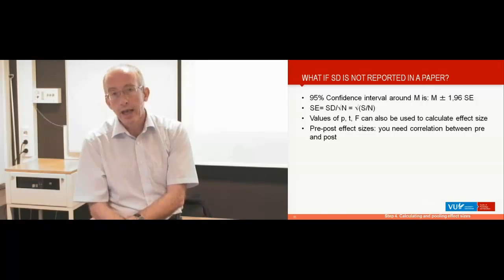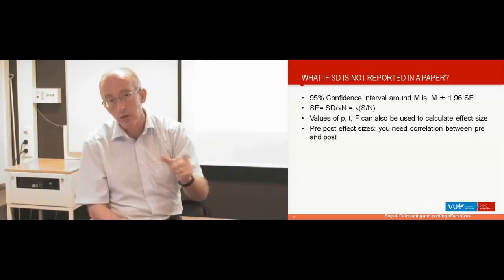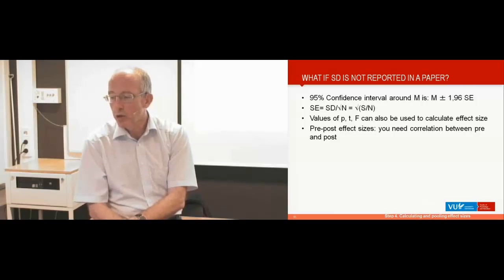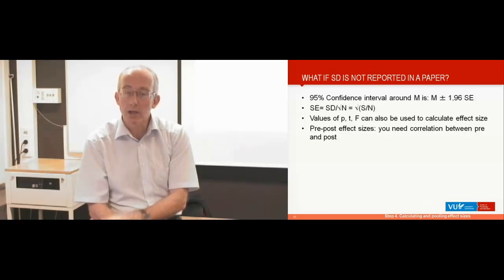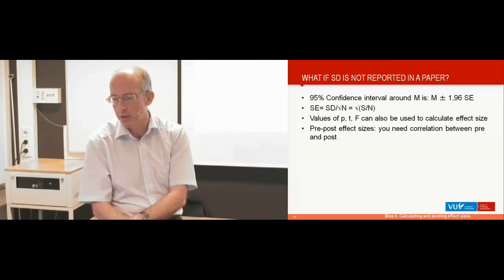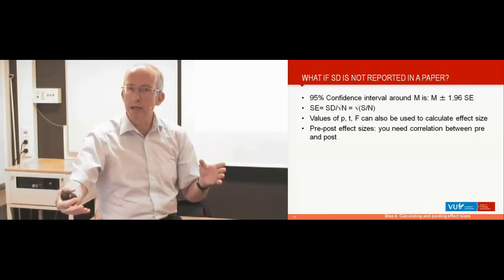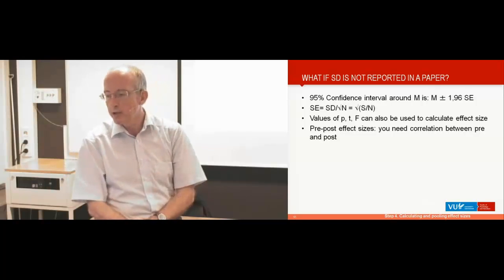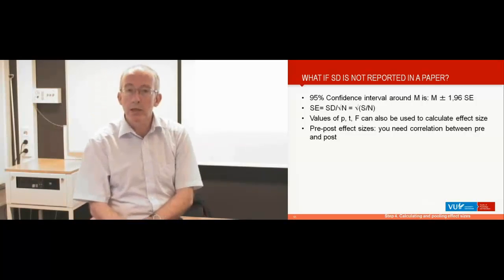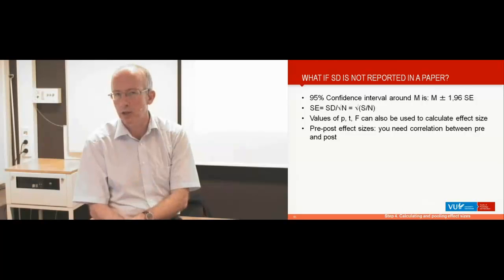If you have only exact p-values, t-values, or f-values — where f-values should only indicate the difference between two groups — you can also calculate effect sizes using software packages, or of course by hand, though that's more specialized. If you want to calculate effect sizes from baseline to post-test within one group, you also need the correlation between the pre-test score and the post-test score, and that's often difficult because most studies do not report that.